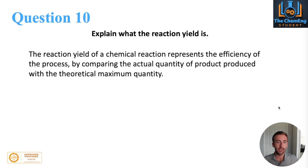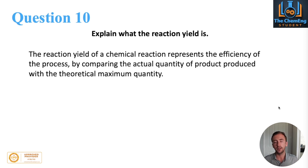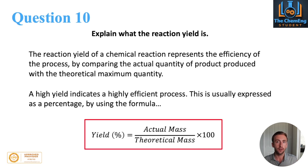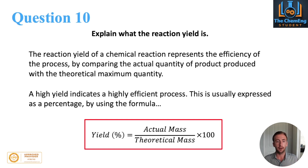The final question is: explain what the reaction yield is. Reaction yield basically represents the efficiency of the process by comparing the actual quantity of product produced versus the theoretical maximum quantity. You work out what you should theoretically achieve, and then compare it to what you actually achieve — the ratio of that is the yield. The higher the yield, the more efficient the process. You typically multiply by 100 to express it as a percentage.